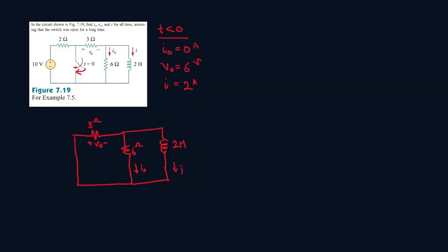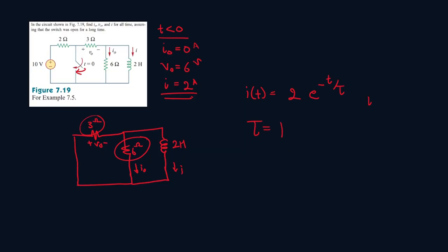Now let's find a formula to represent I. I(T) equals I(0) times e to the power of negative T over the time constant. I(0) was 2 amps. The time constant equals inductance over equivalent resistance: the inductance is 2 Henrys, and the 3-ohm and 6-ohm resistors are in parallel — (1/3 + 1/6)^(-1) equals 2 ohms — so the time constant equals 2 over 2, which is 1. This gives I equals 2e to the power of negative T amps.